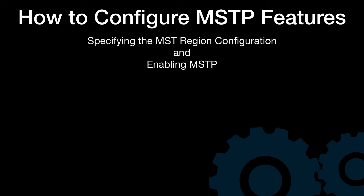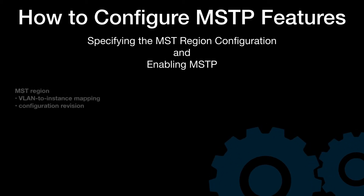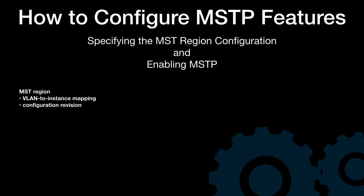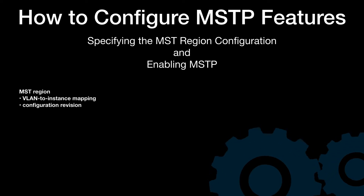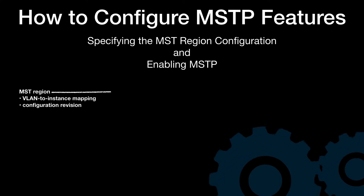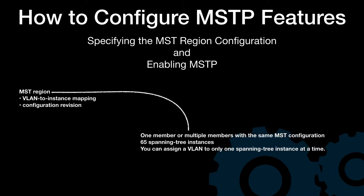How to configure MSTP features. For two or more switches to be in the same MST region, they must have the same VLAN-to-instance mapping, the same configuration revision number, and the same name. A region can have one member or multiple members with the same MST configuration.